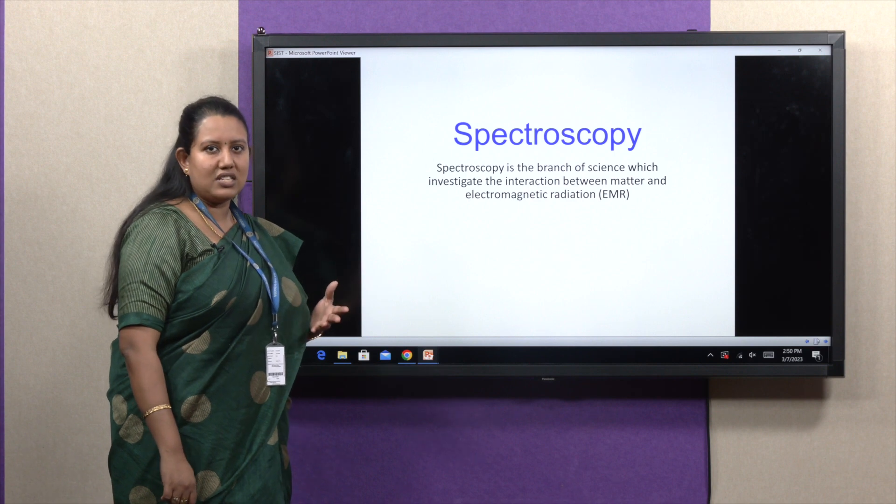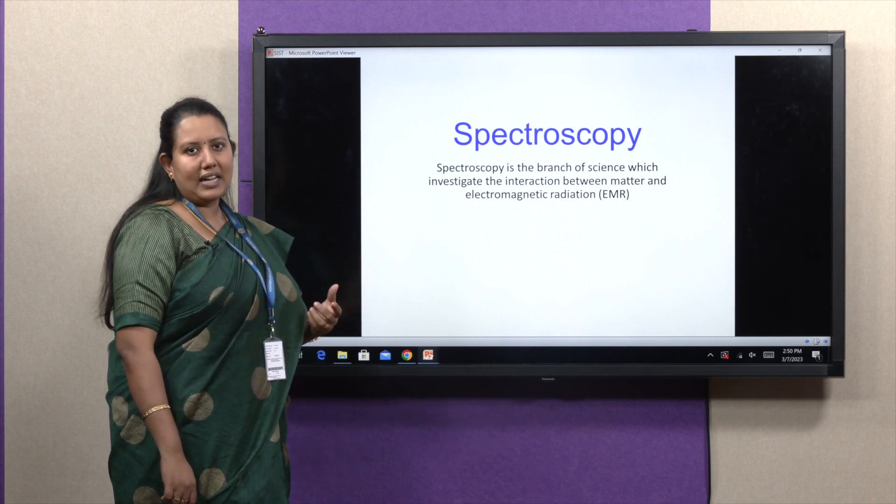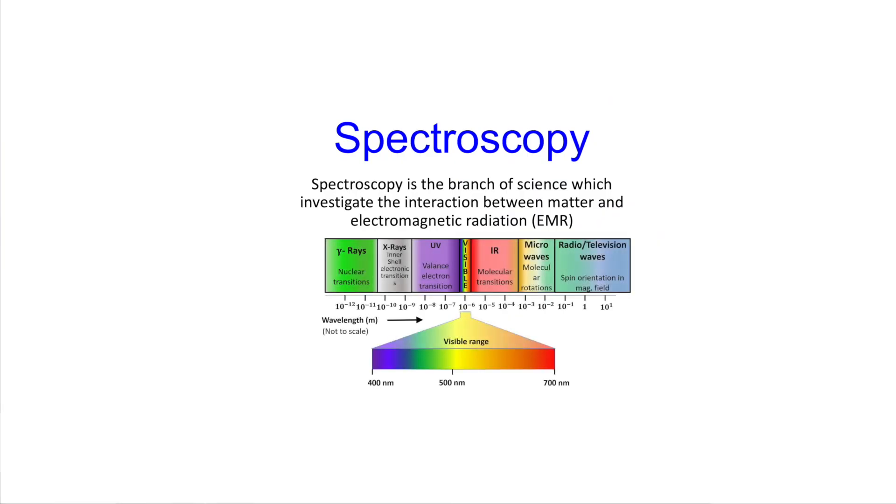First, learn what is spectroscopy. Spectroscopy is a branch of science which investigates the interaction between matter with electromagnetic radiation. Electromagnetic radiation consists of various rays like gamma ray, X-ray, UV visible ray,